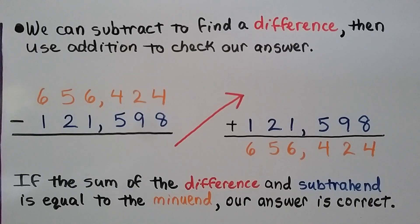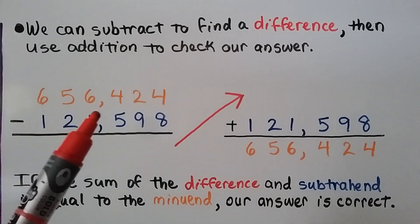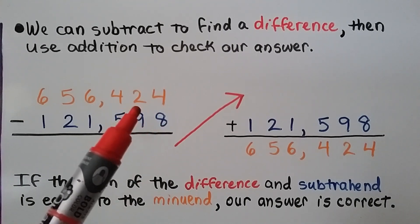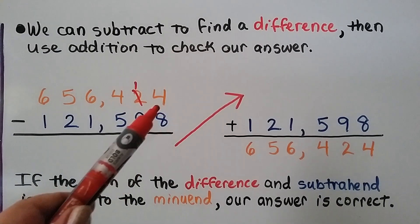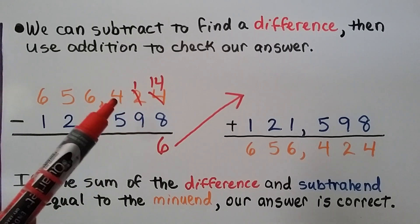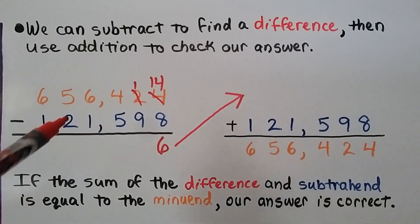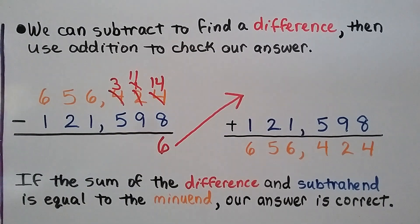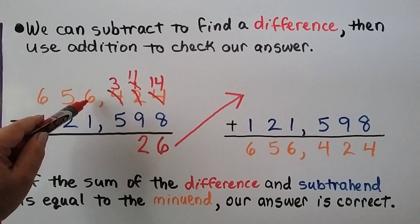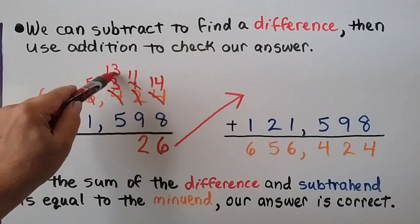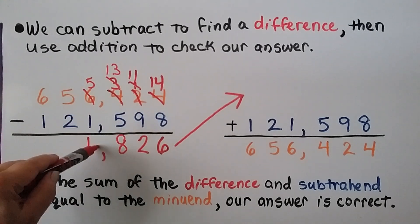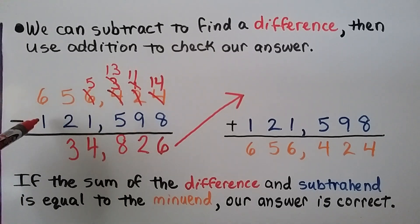We can subtract to find a difference, then use addition to check our answer. We have 656,424 minus 121,598. We have a 4 and need to take 8 away, but we can't. So we go to the tens place: the 2 becomes a 1 and the 4 becomes a 14. 14 take away 8 is 6. Now we have 1 take away 9 and we can't, so the 4 becomes a 3 and the 1 becomes an 11. 11 take away 9 is 2. We have 3 take away 5 and we can't, so we go to the next place value — it becomes a 5 and this 3 becomes a 13. 13 minus 5 is 8. We line up our comma. 5 minus 1 is 4, 5 minus 2 is 3, and 6 minus 1 is 5.